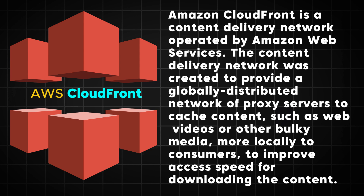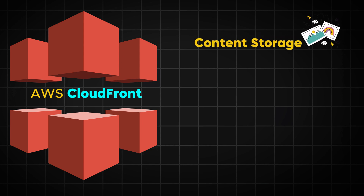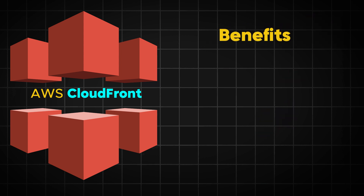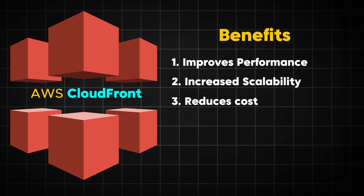Here is how CloudFront works: First, content like images is stored in an origin server such as an Amazon S3 bucket. Then CloudFront distributes your content to a network of edge locations around the world. When a user requests your content, CloudFront delivers it from the nearest edge location, reducing latency and improving performance. Key benefits of CloudFront include improved performance, increased scalability, reduced cost, global reach, and enhanced security.